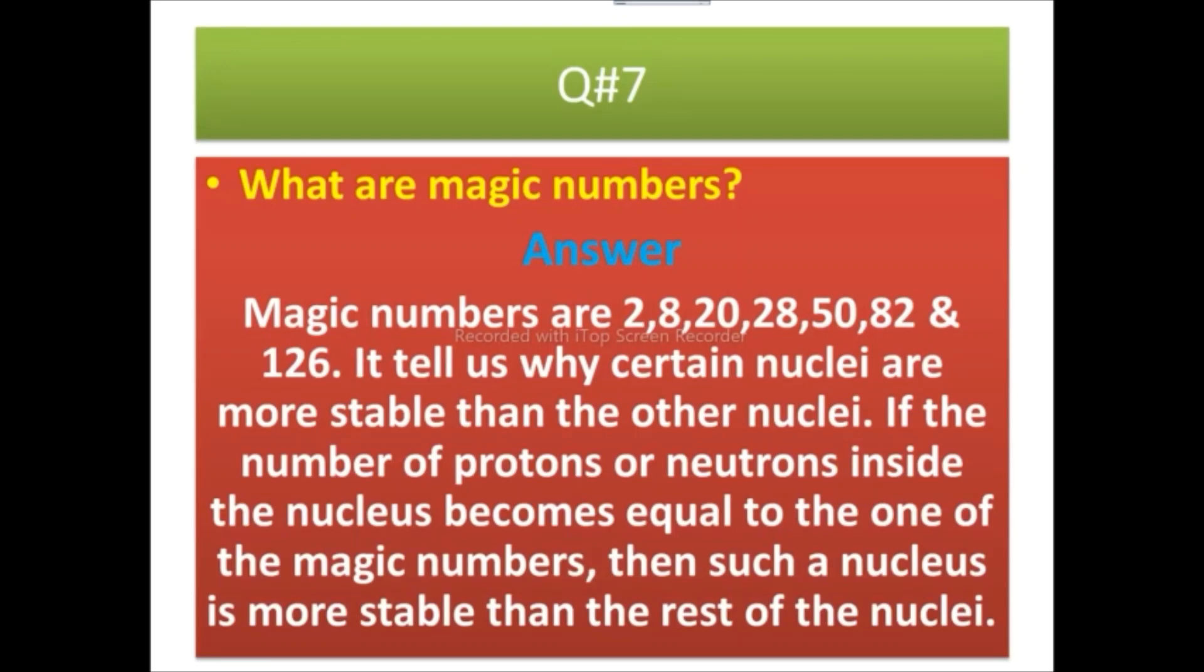It tells us why certain nuclei are more stable than the other nuclei. If the number of protons or neutrons inside the nucleus becomes equal to one of the magic numbers, then such nucleus is more stable than the rest of the nuclei.